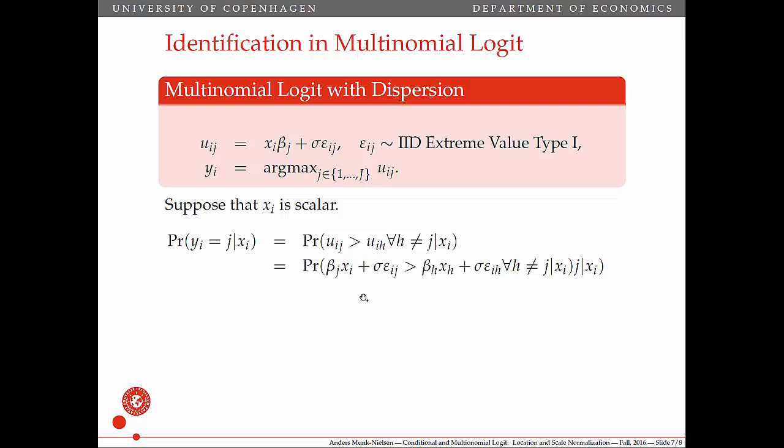So what you see here is that if we multiply by K on both sides of these inequalities, we can do that if K is positive. Then we've left it unchanged and the probability is the same. So if we take all of the beta_j's and multiply them by K and take all of the sigmas and multiply them by K, then we get the same probabilities. The probabilities are unchanged.